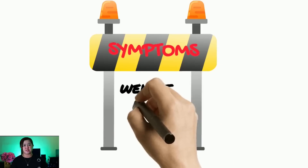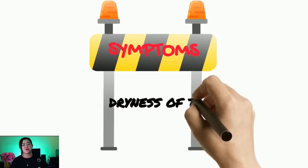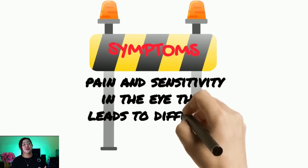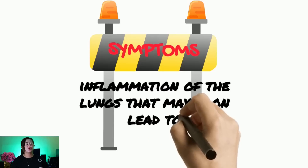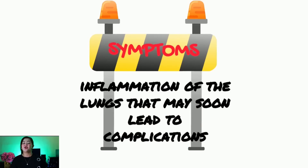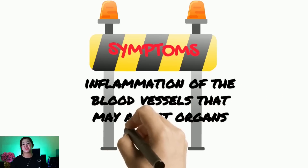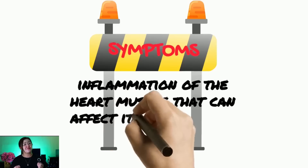You would have body malaise or muscle pain. You may manifest with weight loss. You can experience anemia, because of the decreasing red blood cells in your blood. You may experience dryness in your mouth. You may also feel difficulty, pain, and sensitivity to your eyes or difficulty seeing. You may also experience inflammation of your lungs that would lead to shortness of breath or difficulty breathing, and would eventually lead to varied lung conditions. You may also experience inflammation of your blood vessels that may lead to an affectation of your skin and your different organs of the body. Lastly, it can also manifest with inflammation of your heart muscle that would eventually affect your heart and its surrounding structures.